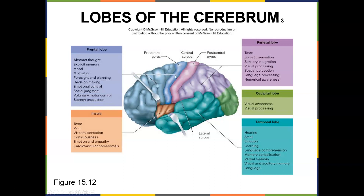Here's the precentral gyrus, the central sulcus, and the postcentral gyrus — this is sensory, this is motor. The parietal lobe handles taste, somatic sensation, sensory integration, visual processing, spatial perception, language processing, and numeric awareness.